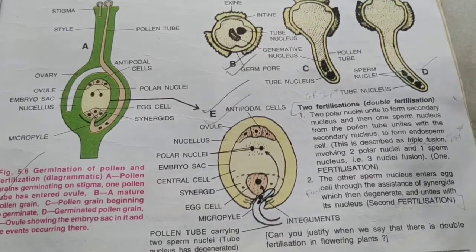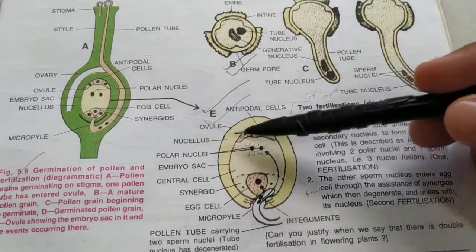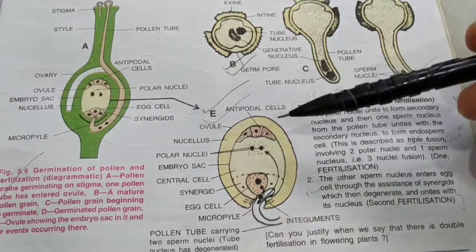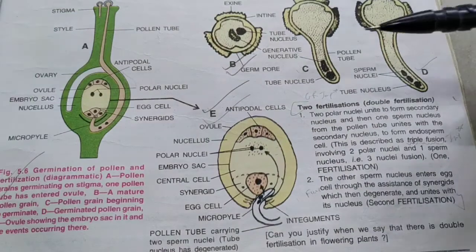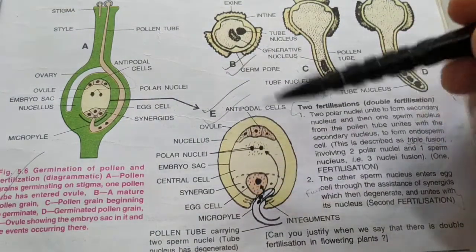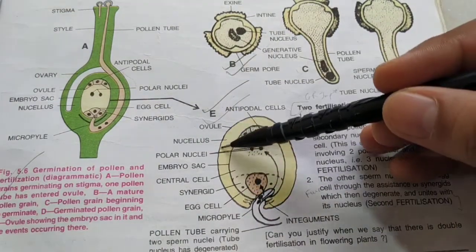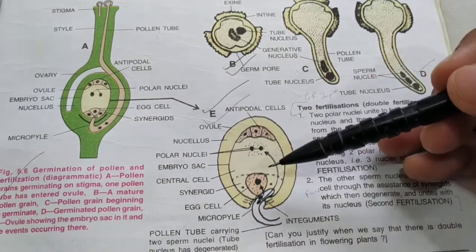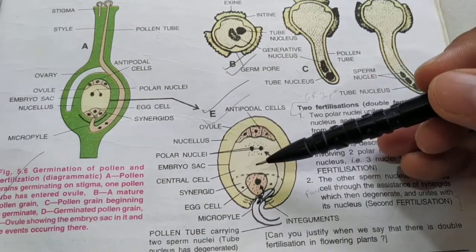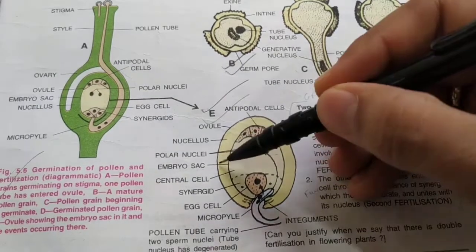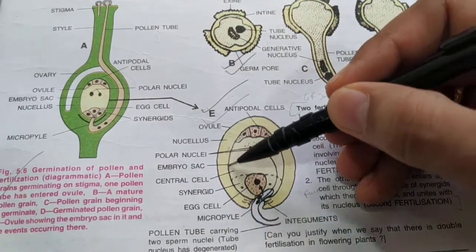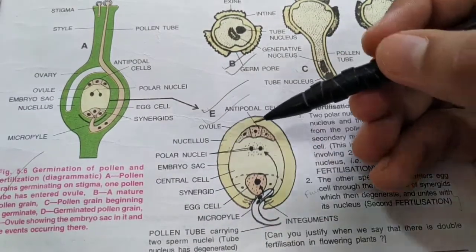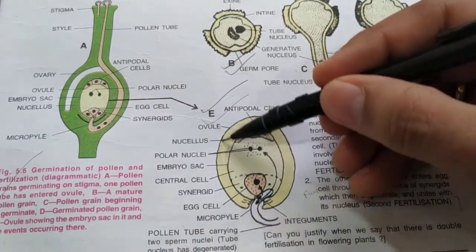The ovule is inside the ovary of the carpel. The ovule has a nutritive tissue just inside it called the nucellus, which is bound by two layers of integuments: the inner integument and the outer integument. In between, there are food-laden cells.